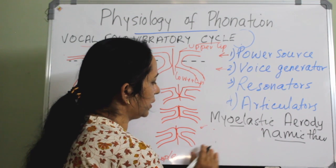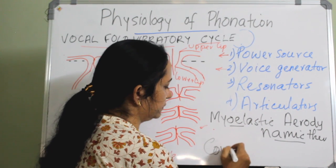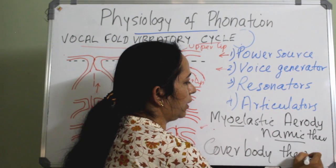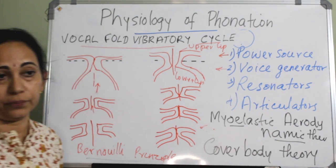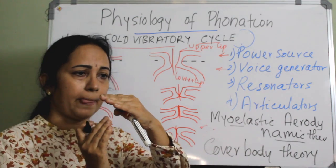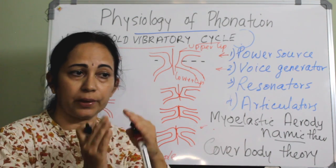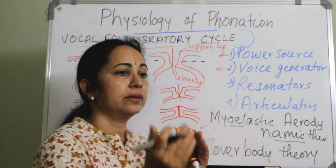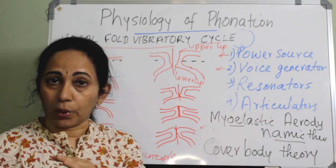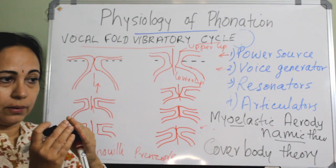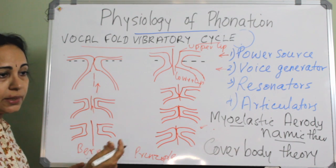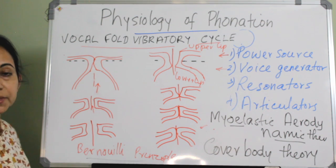The other theory is the cover-body theory. The epithelium and the superficial layer of the lamina propria act as a cover, and the vocal ligament along with the muscle acts as a body. The cover moves over the body.